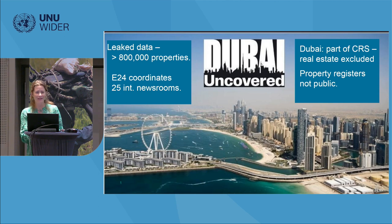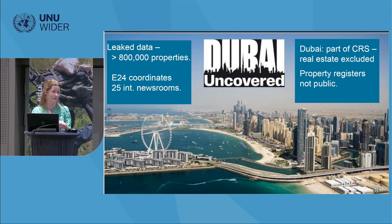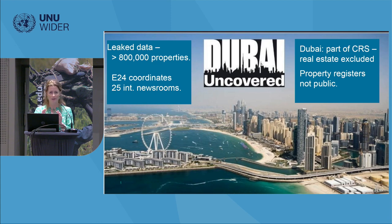For the first time we got a peek into the offshore world of real estate. We got access to all owners - more than 800,000 properties in Dubai, which is a major offshore jurisdiction. It's relatively easy for foreigners to buy properties. Dubai is part of the CRS, so by that definition not a tax haven, but property registers are not public. This was data that was leaked to the US think tank C4ADS, and it's very important to say we had nothing to do with the leak - we used the data after the leak was done.